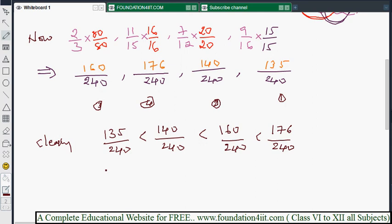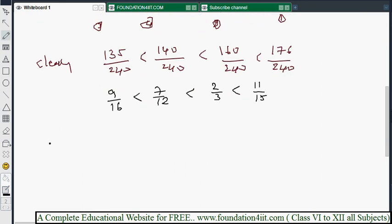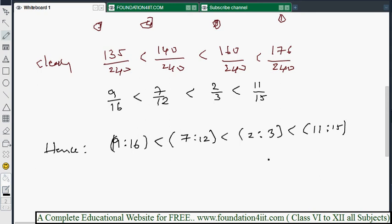You can make the values. 135 by 240 means 9 by 16. 9 by 16 is less than 140 by 240 means 7 by 12, less than 2 by 3. 160 by 240 is less than 176 means 11 by 15. Hence, finally we can write the conclusion. That means 9 is to 16 ratio is less than 7 is to 12, is less than 2 is to 3, is less than 11 is to 15.